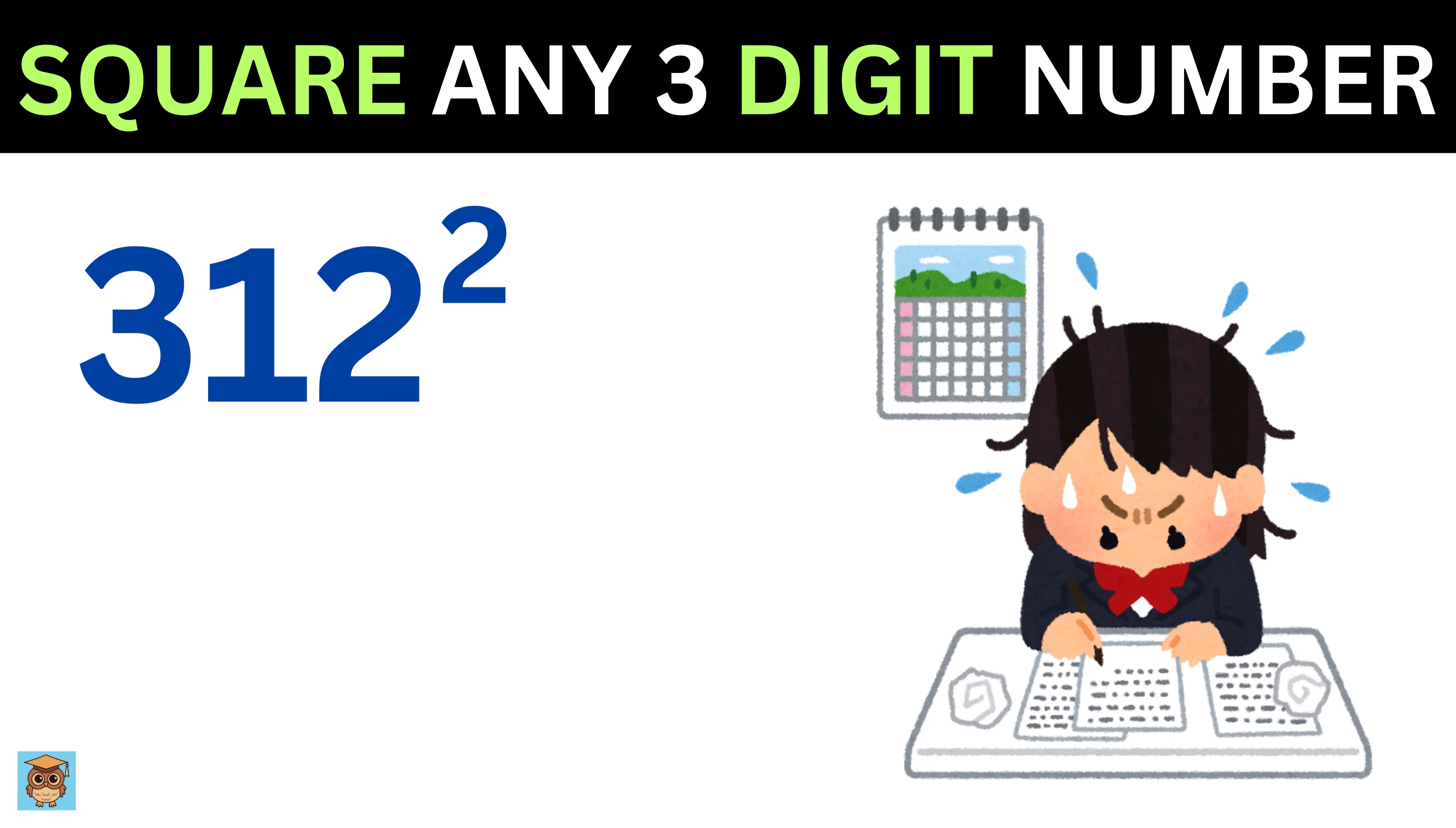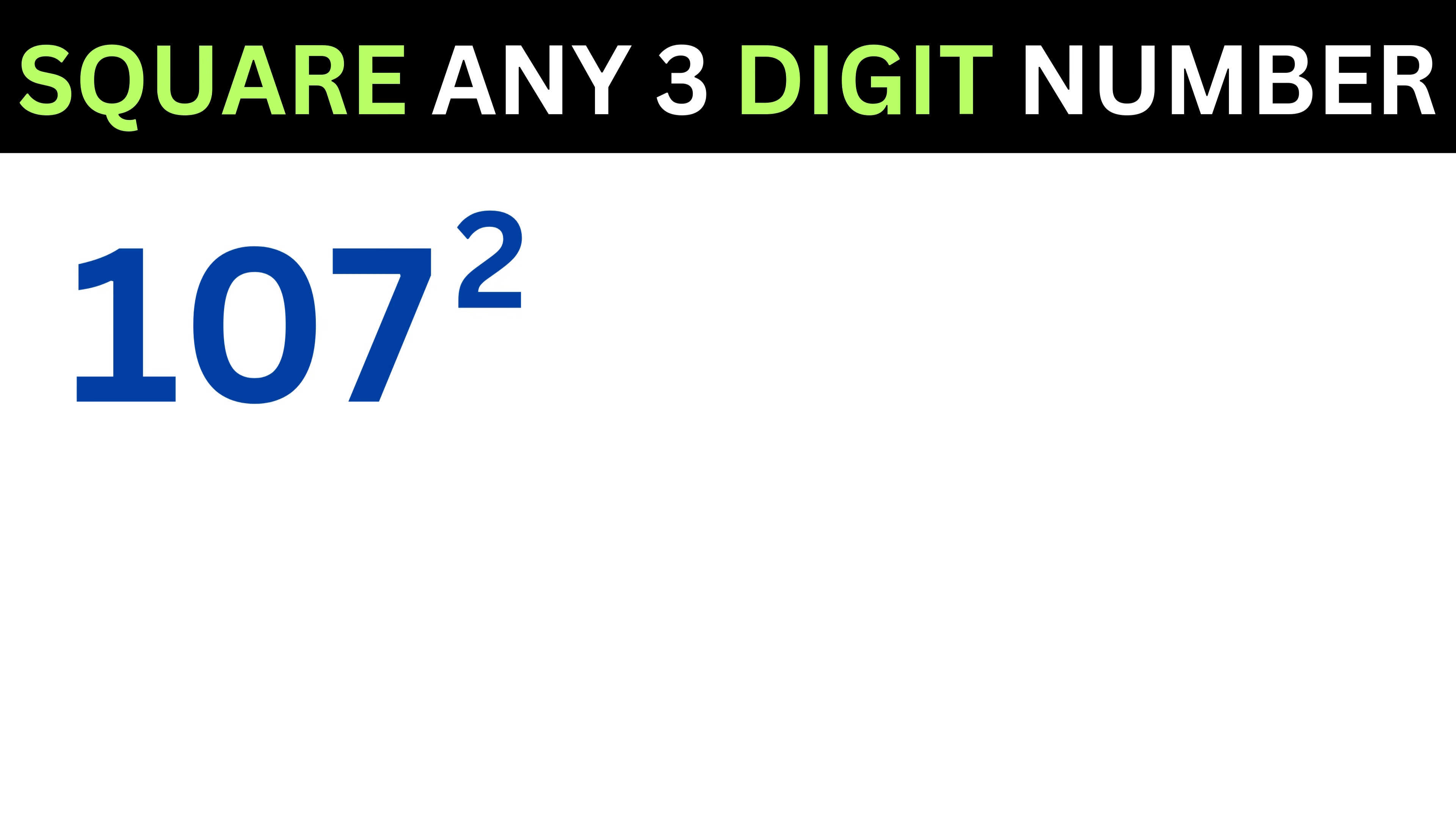Okay, let us start with an example like 107 square. The very first step is to separate this number into two parts, the first digit and the last two digits. Like this, 1 will be the first part, and 07 will be the other part.